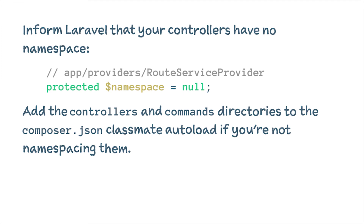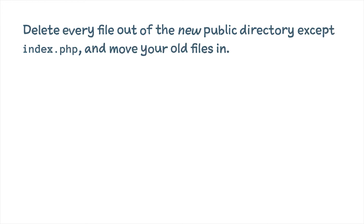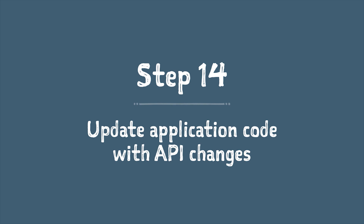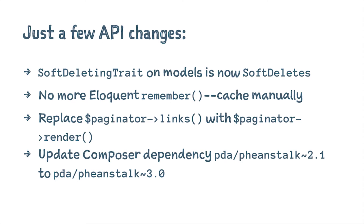Move your public directory over — delete everything from the new one except `index.php` and copy all your assets in. Then update your application code where it relies on the Laravel API. There are only a few changes: the SoftDeletingTrait is now SoftDeletes; Eloquent `remember()` no longer exists and you have to manage your own caching; `Paginator::links()` was renamed to `Paginator::render()`; and Flysystem is version 3.0 instead of 2.1. For anything else, check the upgrade guide — there are very few breaking API changes.